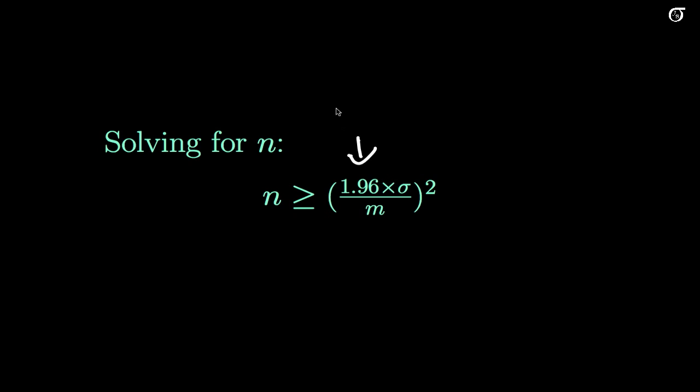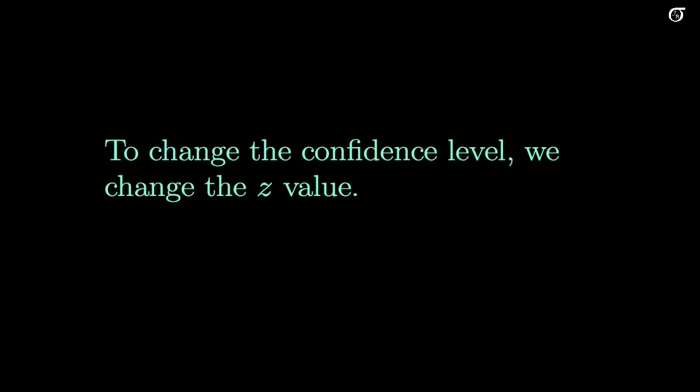Now that 1.96 is depending on that 95% confidence. 95% confidence is very common, but we might want to change that to 99%, maybe 90%, maybe 63.23%, whatever. To change the confidence level, we simply change that 1.96 to the appropriate z value.